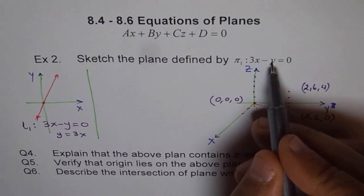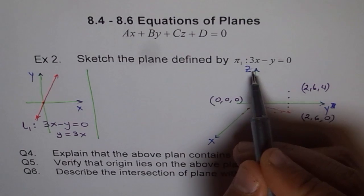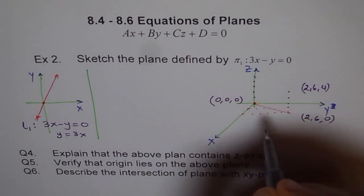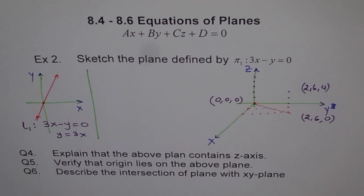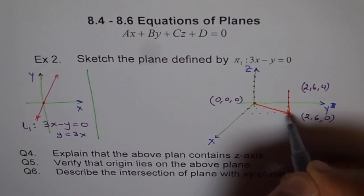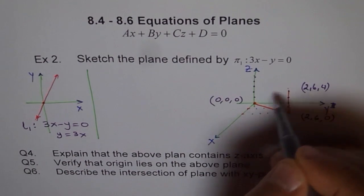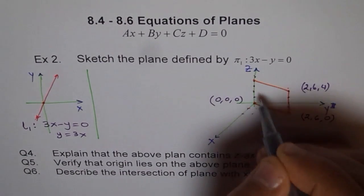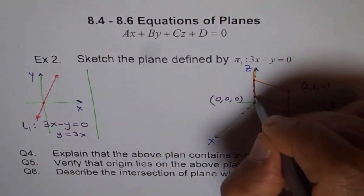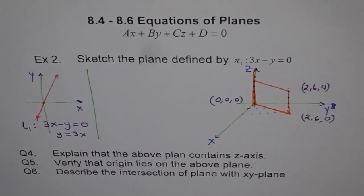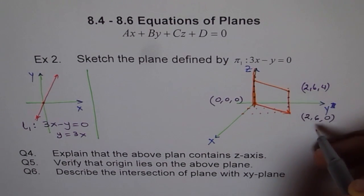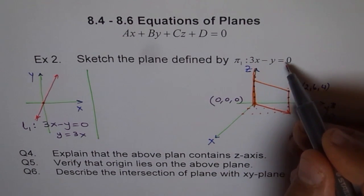So every point on the z-axis will be included in our plane. Therefore we can now draw our plane by connecting all these points. You've got plenty of points to work with. You can visualize this plane like a book — where the z-axis is your binder and the leaves of paper are the plane itself. That forms the plane 3x minus y equals 0.